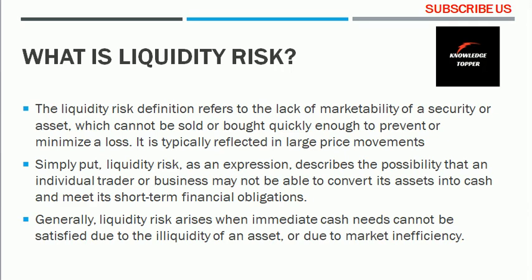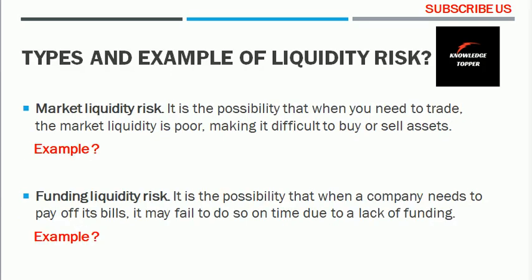There are mainly two types of liquidity risk: market liquidity risk and funding liquidity risk. Market liquidity risk is the possibility that when you need to trade, the market liquidity is poor, making it difficult to buy or sell assets. For example, assume you own an expensive car and need to sell it quickly. However, due to bad market conditions, it can only be sold at a low, discounted price. The asset does have value, but owing to the temporary lack of buyers, this value cannot be realized.